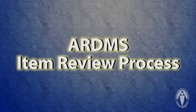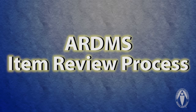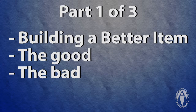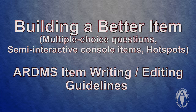What we're going to do today is go through the review process — how we go about reviewing an item. For item writers it works the same way; the same thought process works just in reverse. The first thing we're going to talk about is how to build a better item. When we review items, we're looking at whether they are constructed correctly, how we can improve them, and whether they are good to go. While we're focusing on multiple choice questions, the same thought process works for the SIC — the semi-interactive console items — or the hotspot items.